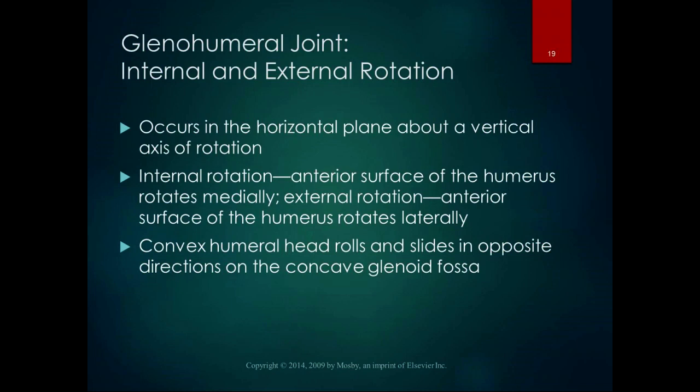Internal and external rotation of the glenohumeral joint occur in the horizontal plane about a vertical axis of rotation. For a muscle to perform internal rotation, it must have an anterior position relative to the joint, pulling from lateral to medial. If it's posterior to the joint, it has a line of pull for external rotation. In internal rotation, the anterior surface of the humerus rotates medially; in external rotation, the anterior surface rotates laterally. The convex humeral head rolls and slides in opposite directions on the concave glenoid fossa during internal and external rotation — very similar to the hip joint.